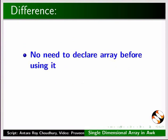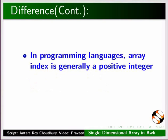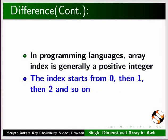First, we do not need to declare an array before using it. Also, there is no need to specify how many elements the array will contain. In programming languages, array index is generally a positive integer. Usually, the index starts from 0, then 1, then 2, and so on.